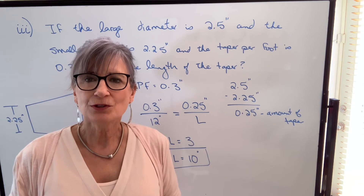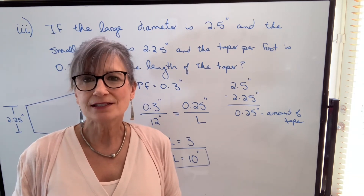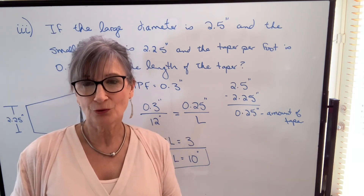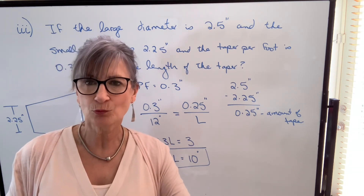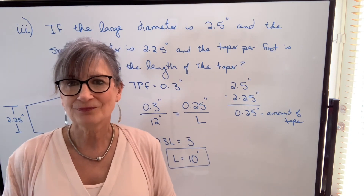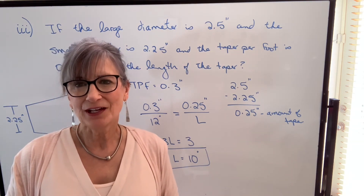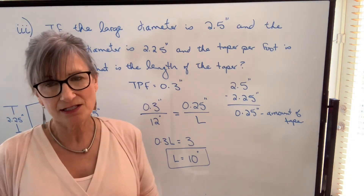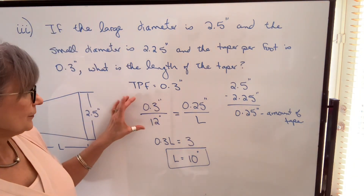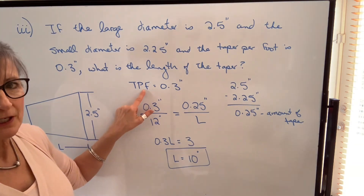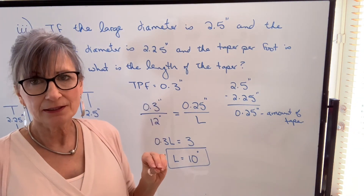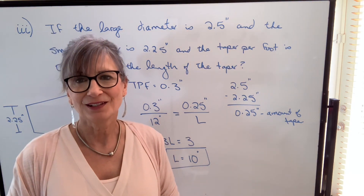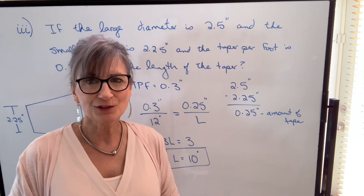As I mentioned, if you were to look up tapers in a machinist handbook, you're going to see a number of different formulas — a formula for finding the length of the piece, another set of formulas for finding the large diameter, and so on. I like to keep it simpler than that. I just look at this as a direct proportion, knowing that the rate of taper has to equal the rate of taper — it stays constant. As long as you know a rate of taper, either taper per foot, taper per inch, or the actual amount of taper over the length, that will equal the rate again where one value is missing. Once you have your proportion set up, you just cross multiply and solve.